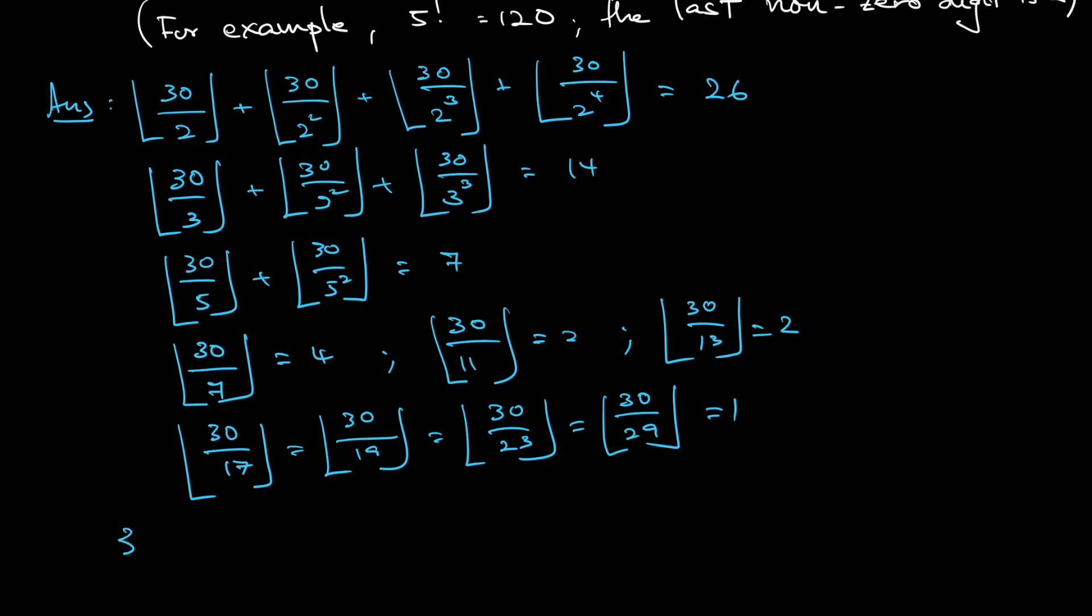So that means 30 factorial is 2 to the power 26, times 3 to the power 14, times 5 to the power 7, times 7 to the power 4, times 11 to the power 2, times 13 to the power 2, times 17 to the power 1, times 19 to the power 1, times 23 to the power 1, times 29 to the power 1.